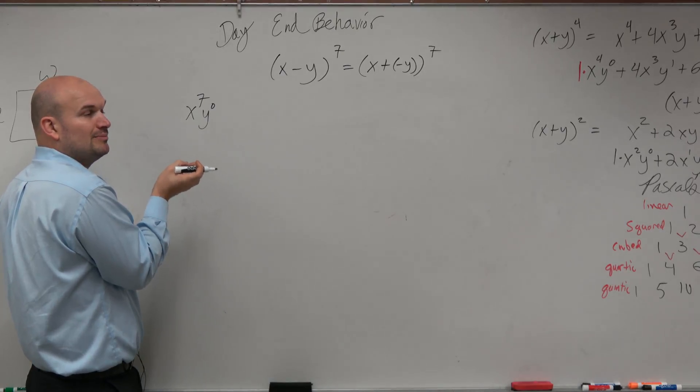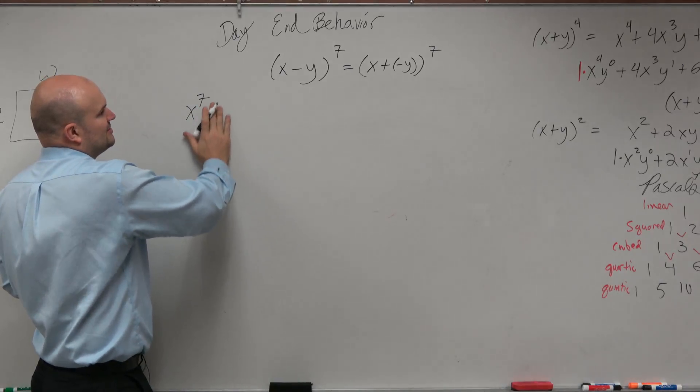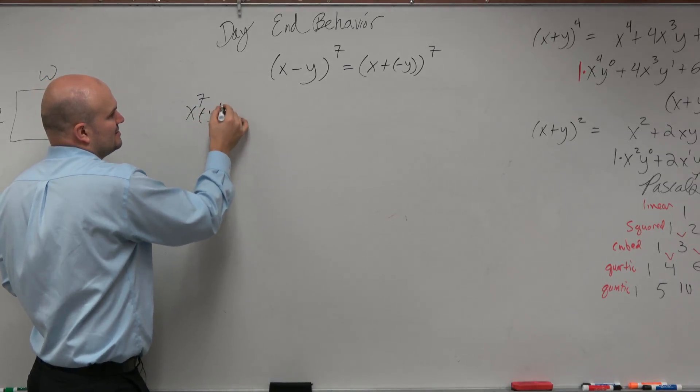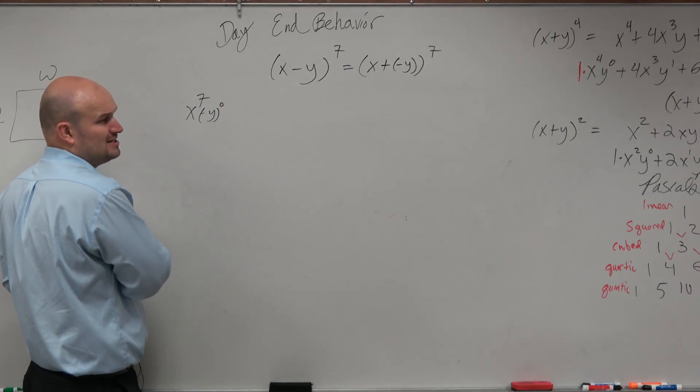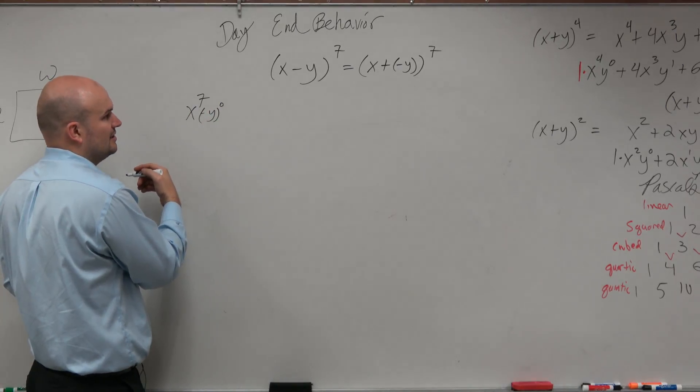Because when we're writing our binomial squared, we want to think of this as like adding, and so what I'm going to do is actually write this as negative y to the 0, and I'll explain why that makes sense. I'll show you why that makes sense here at the end.